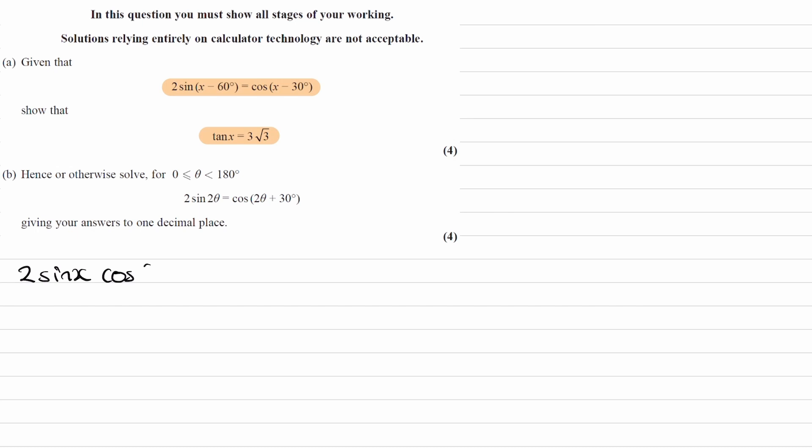2 sin x cos 60° - 2 cos x sin 60°. And that's just using this equation here. And we've just multiplied the expansion of sin(x - 60°) by 2.